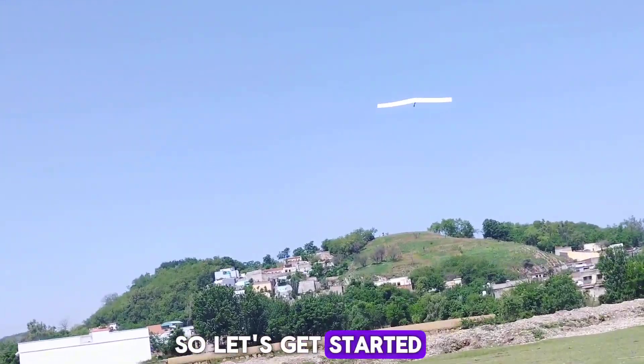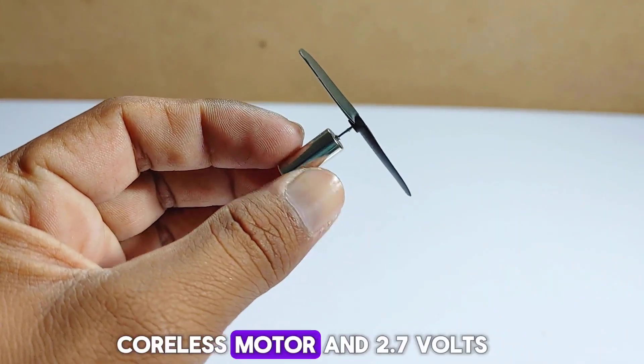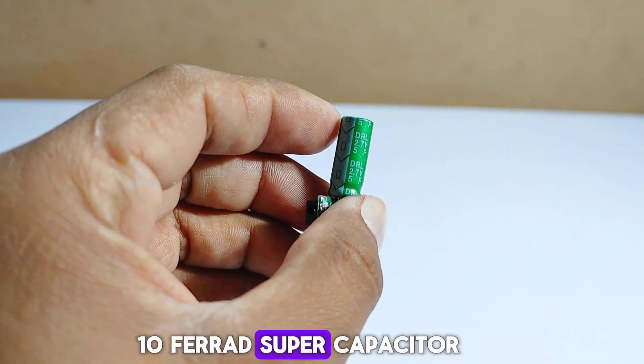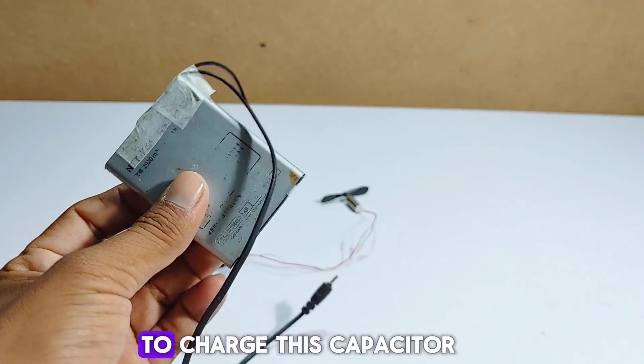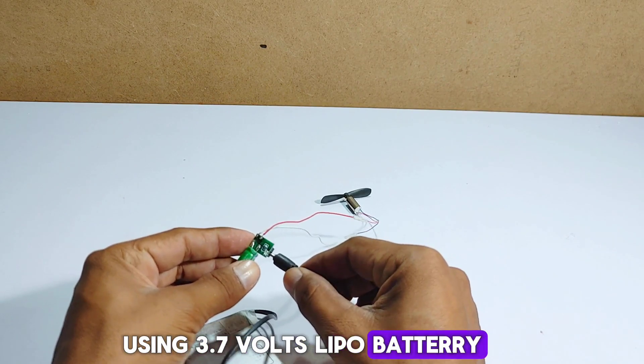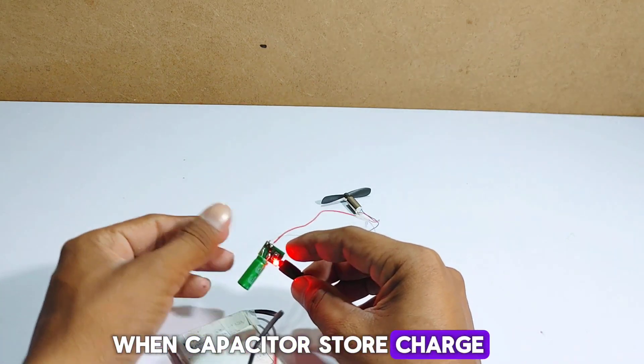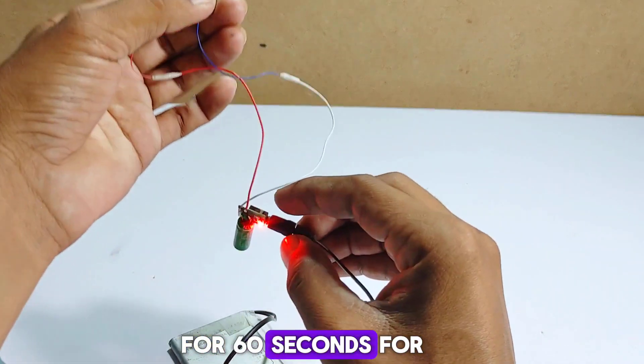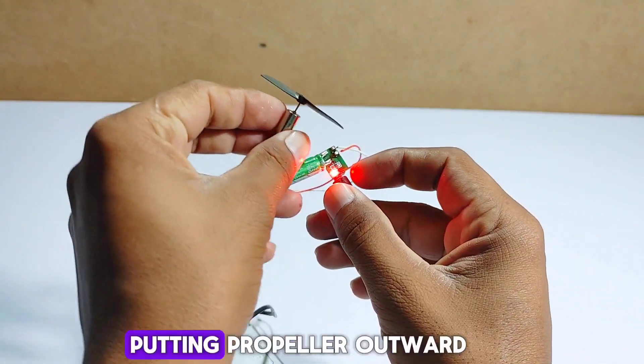So, let's get started. I am using a coreless motor and 2.7 volts 10 farad super capacitor to run this motor. To charge this capacitor, use a 3.7 volts lipo battery. When the capacitor stores charge, it runs the motor for 60 seconds. For pusher thrust, put the propeller outward.